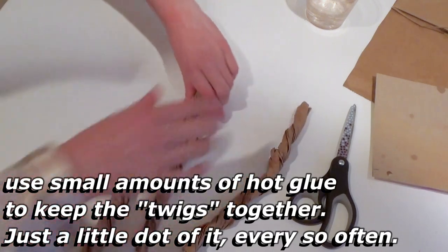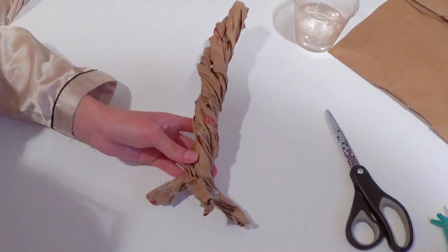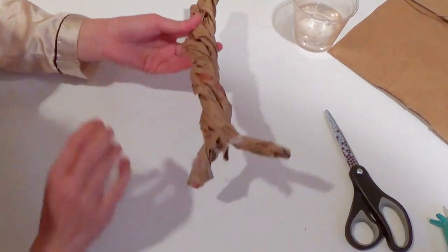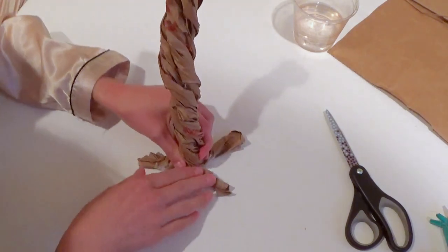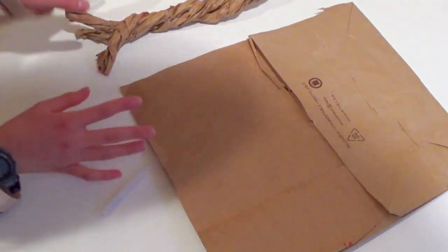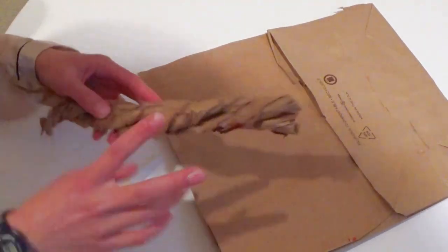Now you have your first little twiggy thing. Repeat this process three more times to make three of these. Then you're going to twist all three of these together. I hot glued all three twigs together and I left the ends open so I can set them up and they can meet the roof.